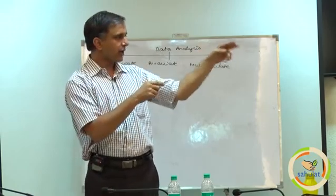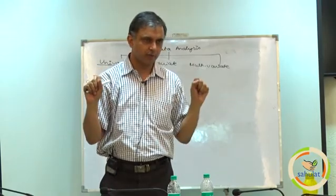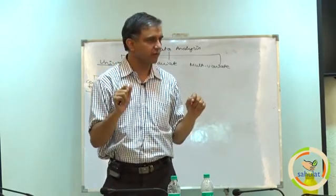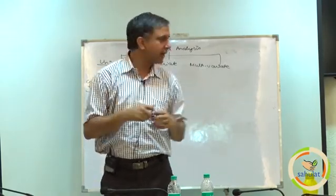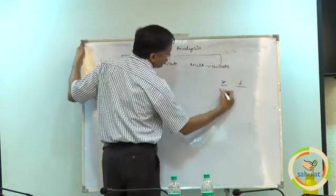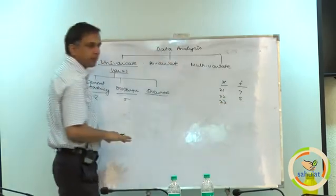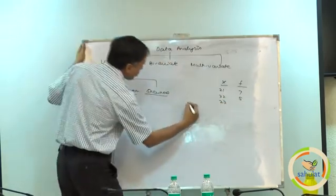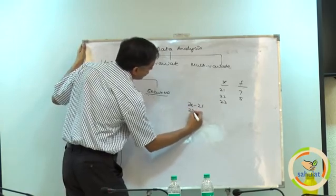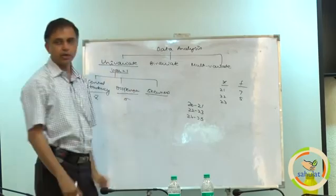First way: 25, 28, 32, 31... That is called individual observations, and the formula for mean is summation x by n. Second way: I can look for how many people are of age 21, how many are 22, how many are 23. That is called the discrete series. Third way: I can group them like 22-23, 24-25. This is called continuous series.